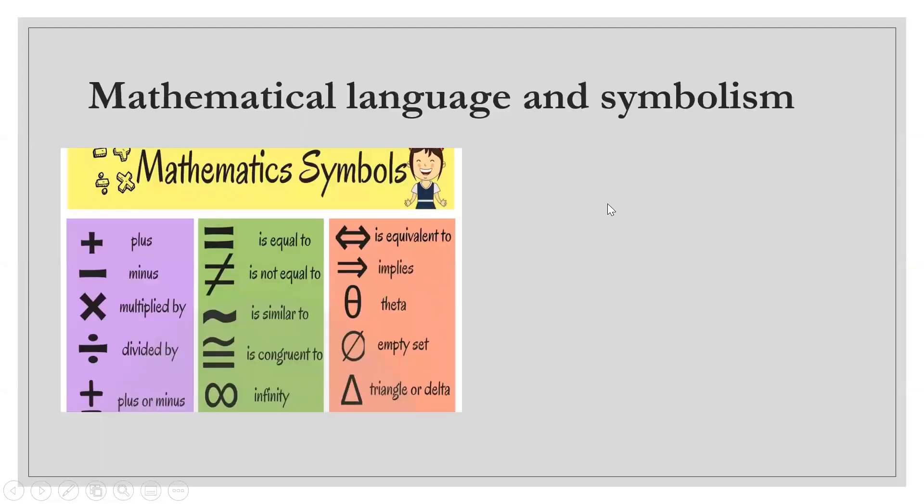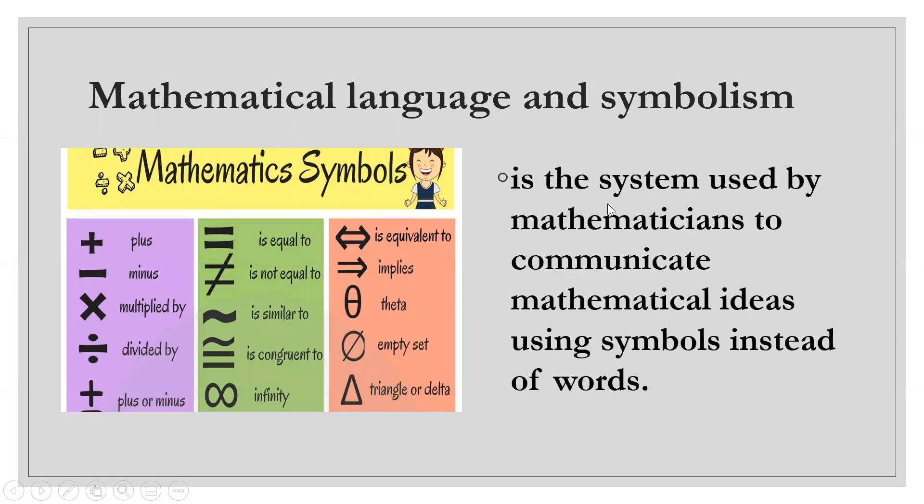Now let's talk about mathematical language and symbolism. This is the system used by mathematicians to communicate mathematical ideas using symbols instead of words. So instead of writing everything in words, mathematicians use symbols.